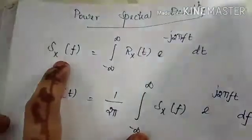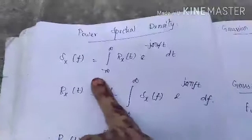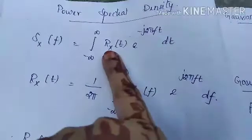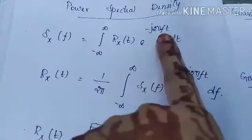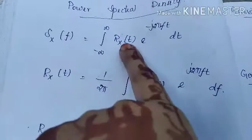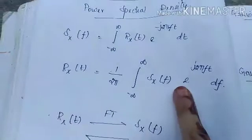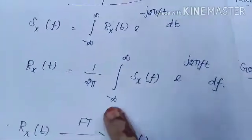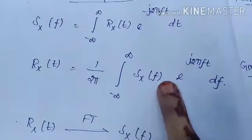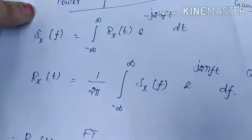Power spectral density is denoted by Sxx of f. The formula is: integral from minus infinity to infinity of Rx(t) e to the power minus j2πft dt. Here Rx(t) is our autocorrelation function. When we want to find the autocorrelation function from the power spectral density, the formula is: (1/2π) integral from minus infinity to infinity of Sxx(f) e to the power j2πft df.